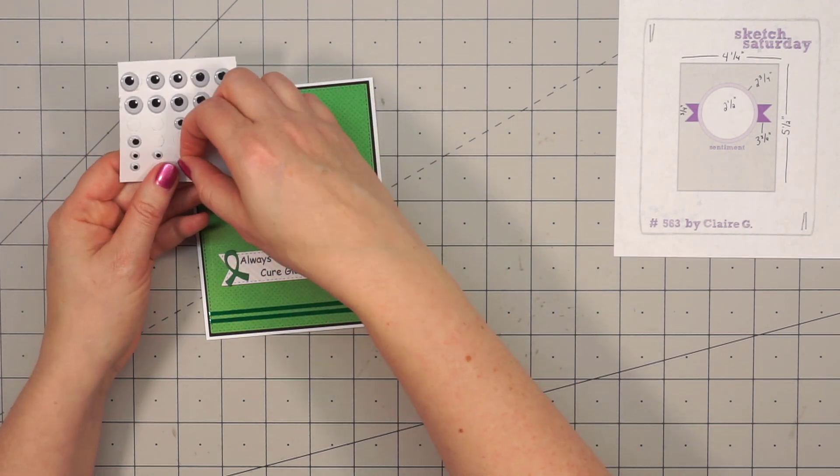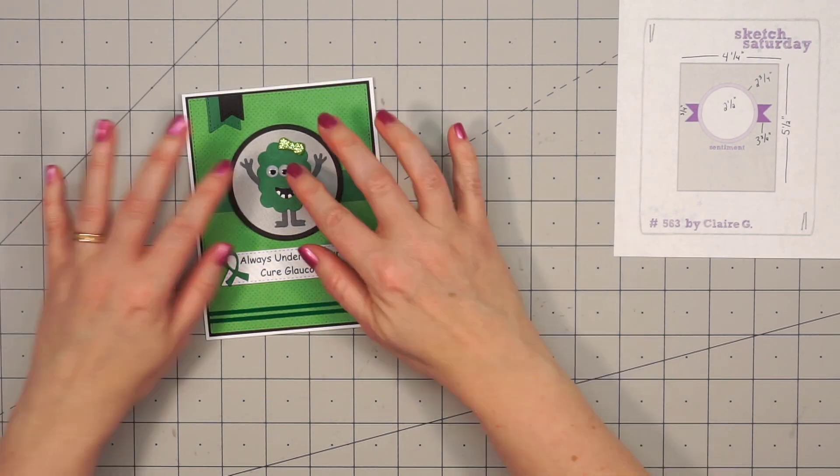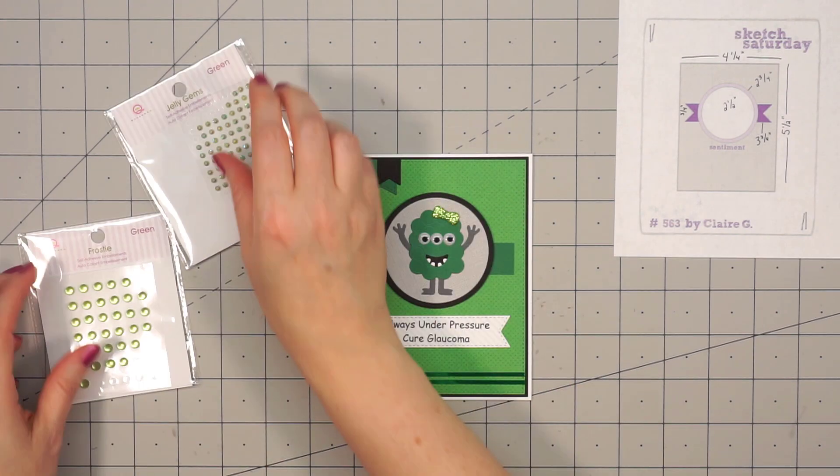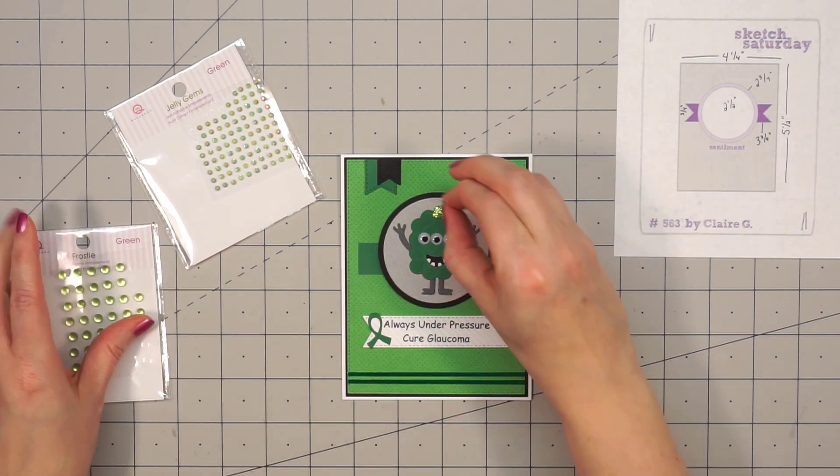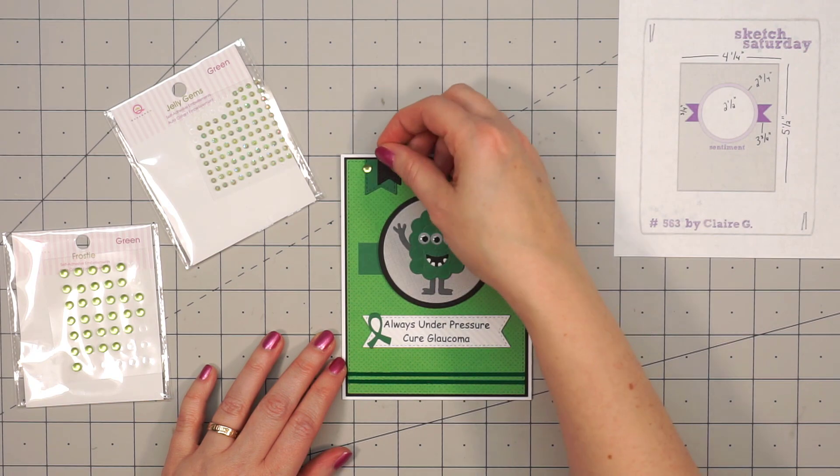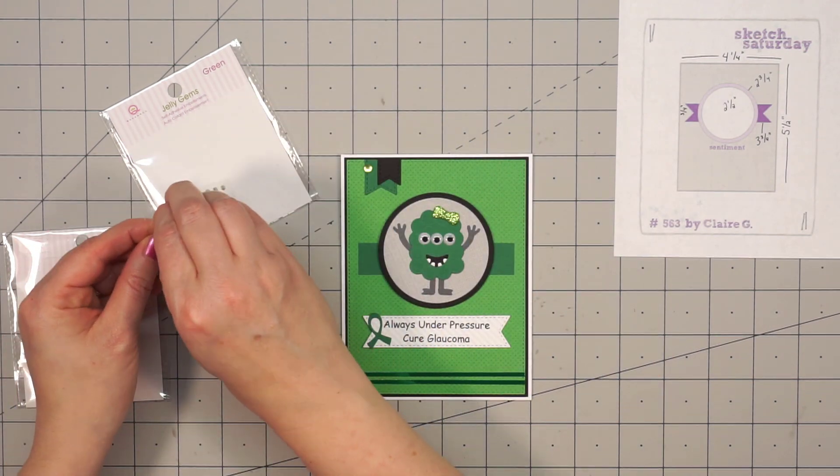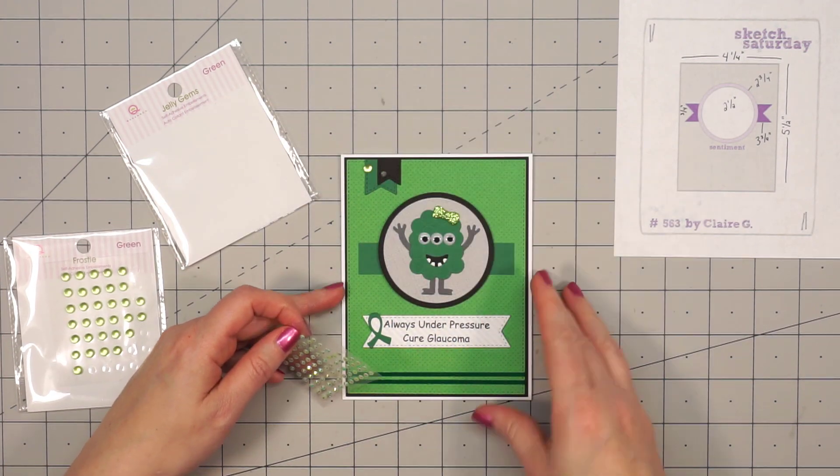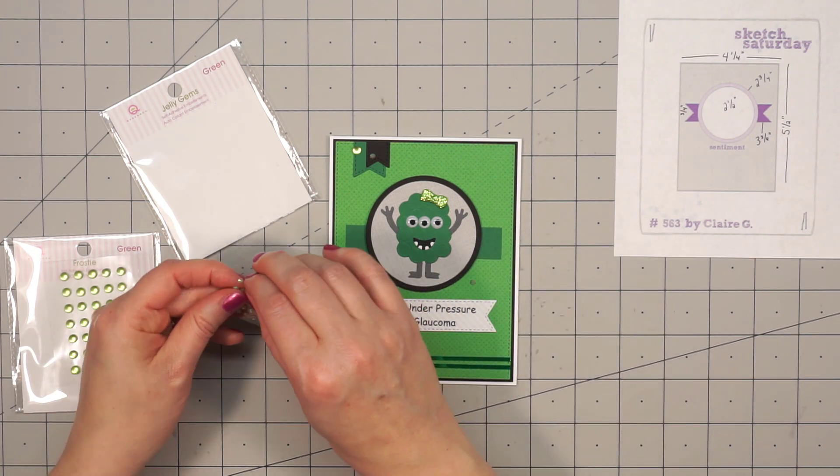So first I have the three eyeballs going across. I wanted to add just a few more since this is a glaucoma awareness card, but I didn't like the look. So I settled with three, and I figured this monster needs at least one extra eye, just in case her vision goes in one of the other eyes. Gotta have a backup.